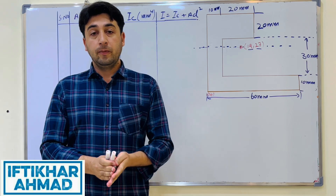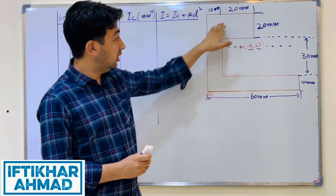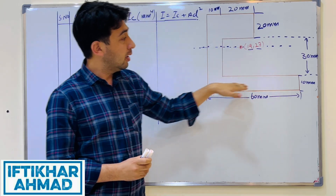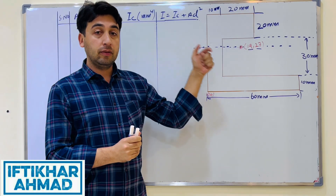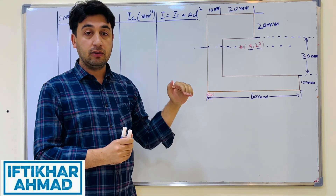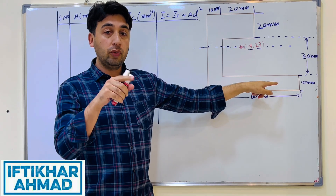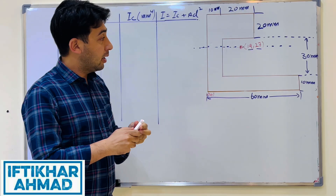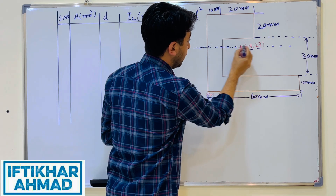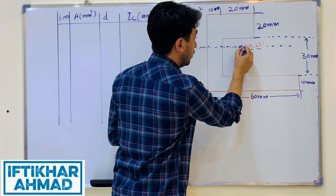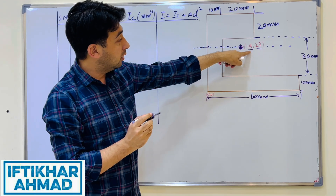Hello everyone, I hope everyone is doing well. In this video we will find the moment of inertia of a C-shape, or C-section. We are finding the moment of inertia about its horizontal centroidal axis. In the previous video we located the centroid of this shape — you can find the video in the description. The centroid is located at x=19 and y=27.